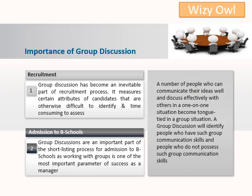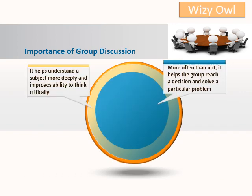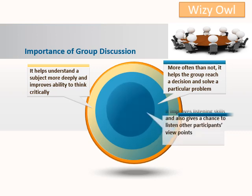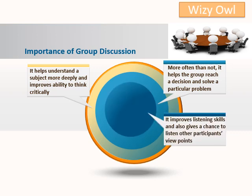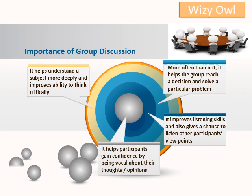A number of people who can usually communicate well in one-to-one situations become tongue-tied in a group situation. Group discussions help in identifying people who have such communication skills and people who do not. More often than not, it helps the group reach a decision and solve a particular problem. It helps understand a subject more deeply, improves the ability to think critically, improves listening skills, and gives participants confidence by being vocal about their thoughts and opinions.